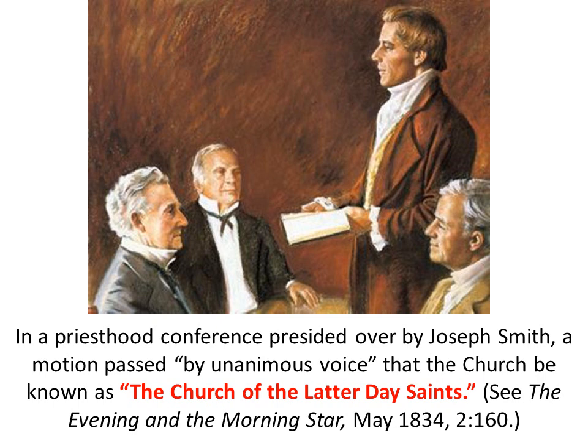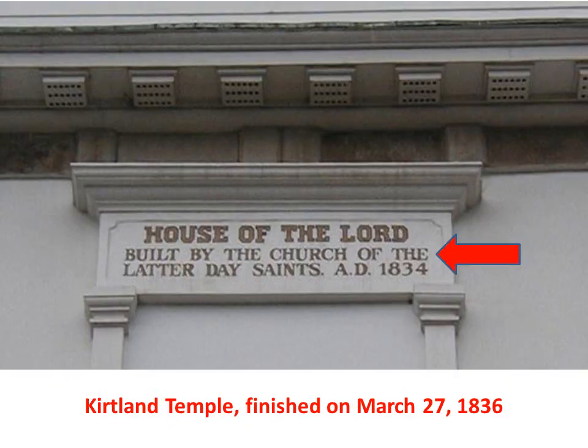You can see this in the Evening and the Morning Star newspaper, May 1834. Joseph wanted to change the name of the church because other Protestant churches were using the name Church of Christ, so they probably had claim on it. As proof, the Kirtland Temple in Ohio — finished on March 27, 1836 — bears the inscription: 'House of the Lord, built by the Church of the Latter-day Saints, A.D. 1834.' This is in the right time frame and it's on the Mormon's own temple.